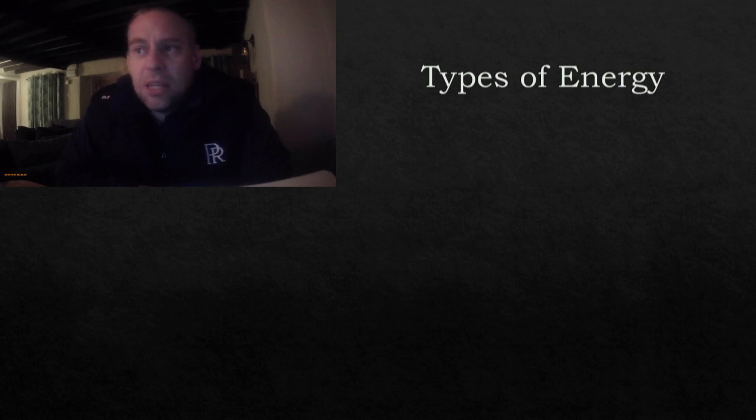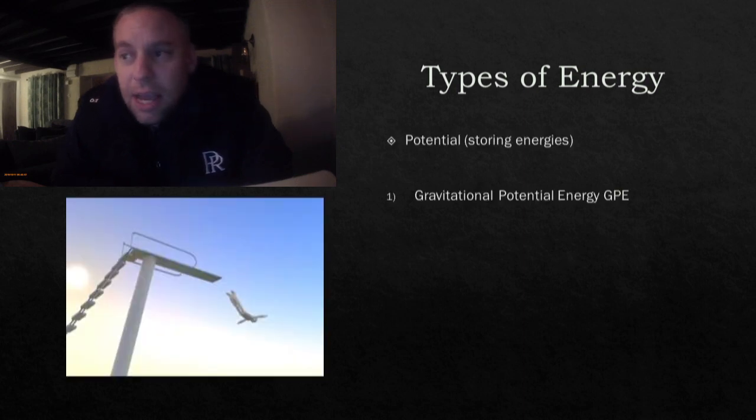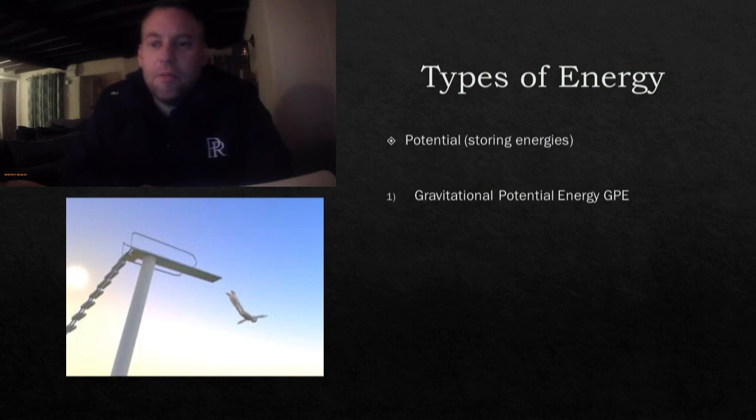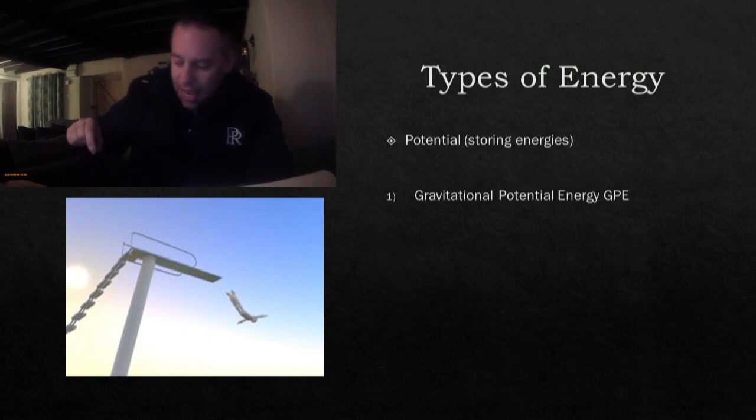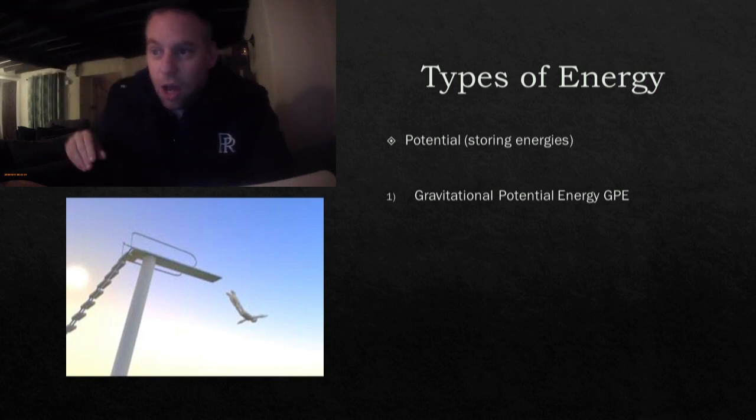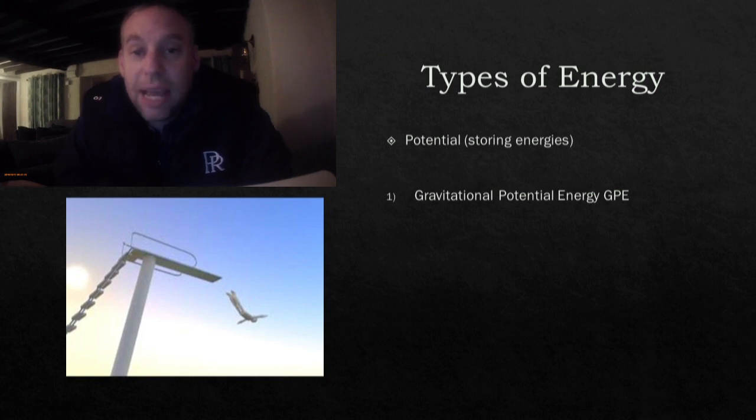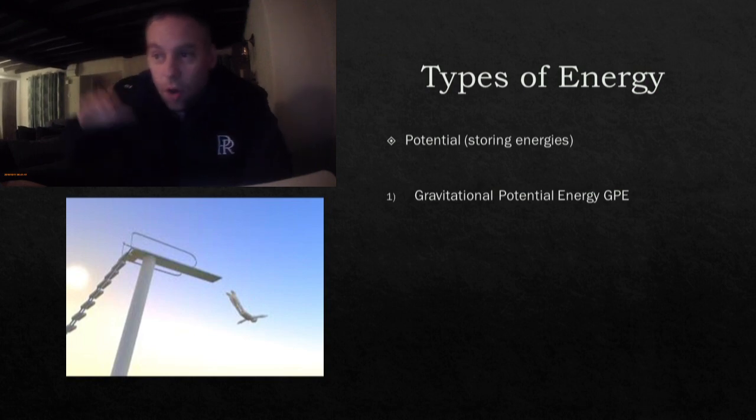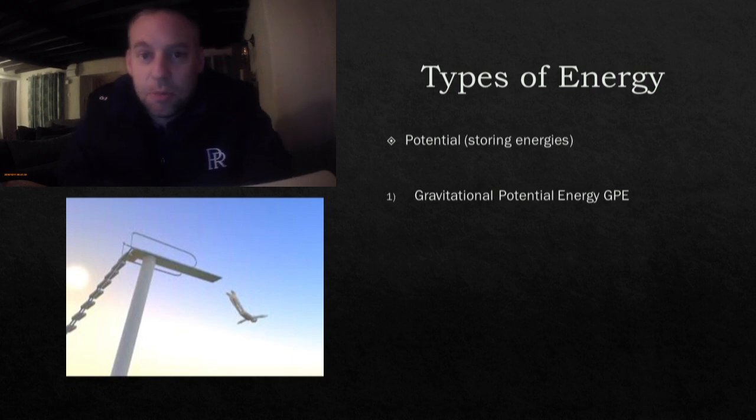Now let's move this on. We're going to start looking at different types of energy. I'm going to go through three types of storing energy. The first is gravitational potential energy. You can see someone diving off a high diving platform. The basic principle is the higher you go, the more energy you're building. So the higher I move it, the more gravitational potential energy it has. And the lower it goes, the less gravitational potential it has.